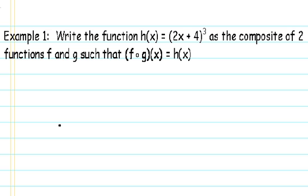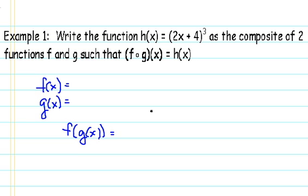Such that f circle g of x equals h of x. Our task is to find a function f of x and a function g of x so that this statement is true. What we're going to do is rewrite f circle g of x with its equivalent f of g of x, and then replace h of x with its equivalent, which is the parentheses 2x plus 4 raised to the third power.